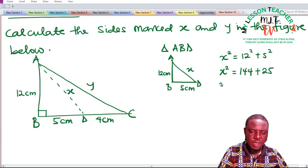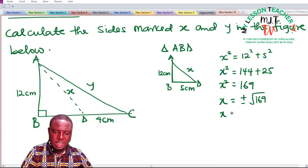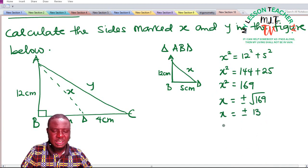x squared is given to be 144 plus 25, which gives us 169. And what is x? x is said to be equal to plus or minus square root of 169, and x is equal to plus or minus 13. But we shall take the absolute value since we are dealing with distance.